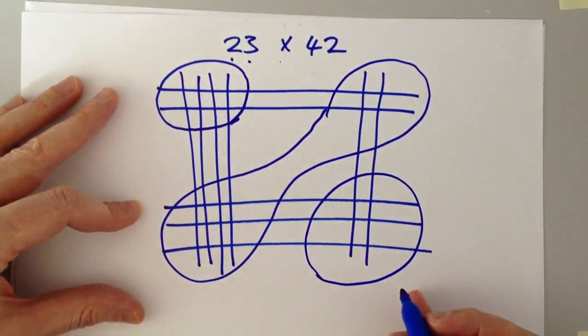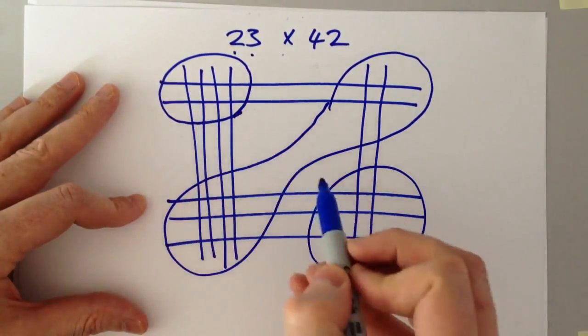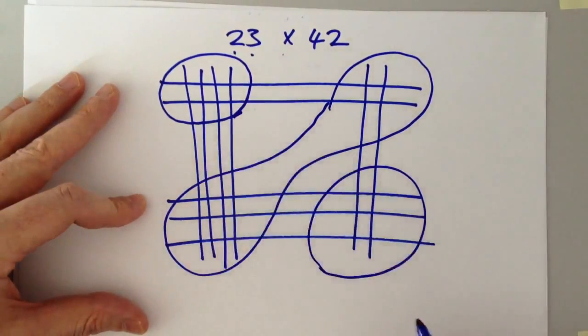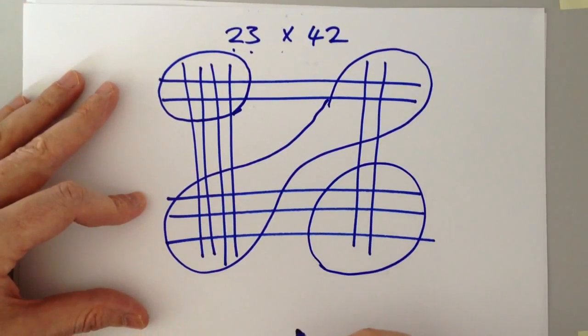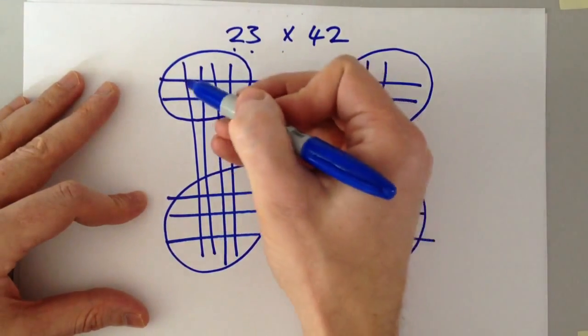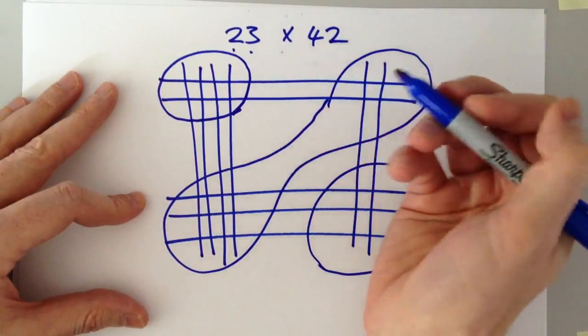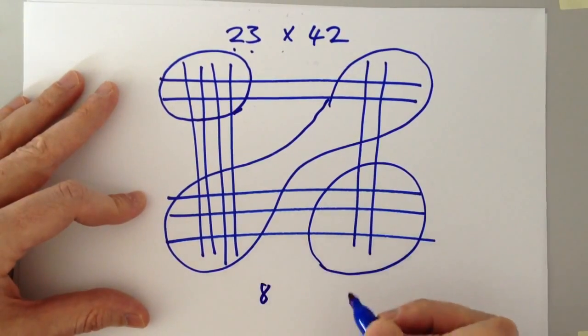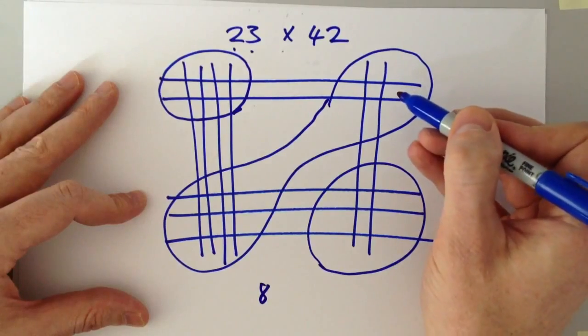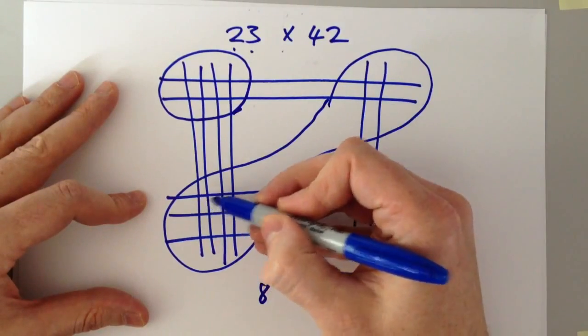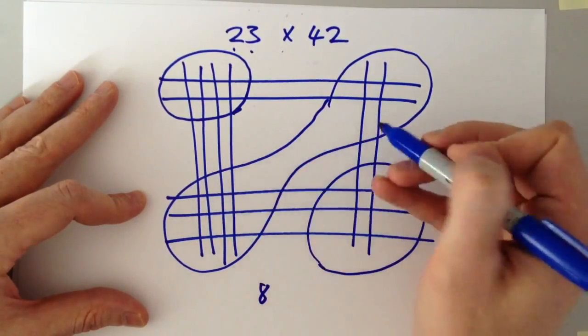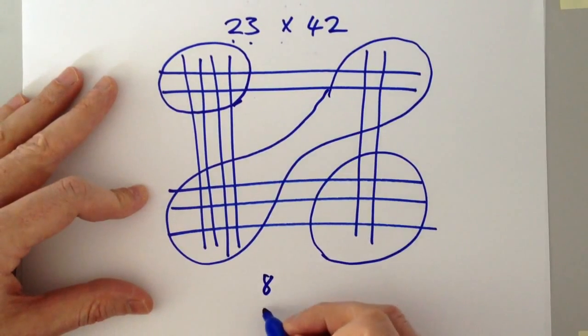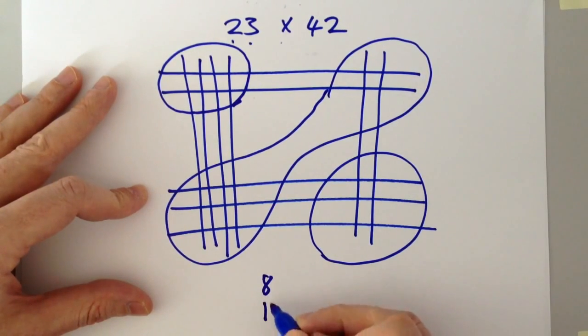We simply add up the numbers of intersects in these groups and write the figures down here to add together. So first we have two by four, which if a child knows their times tables, they'll be able to quickly write down eight. Then we have four plus four by three, which is 12, which is 16. So we write the one, the ten unit under the eight, and then the six next to it.